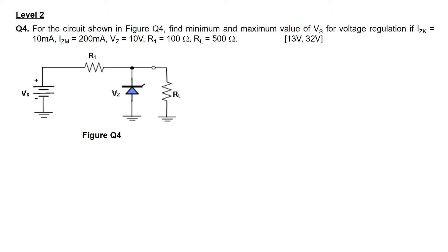To start with this question, we need to find the KVL equation in this loop. In this KVL loop equation, Vs is the voltage provider for the resistor R1 as well as the Zener diode Vz. Hence by KVL, Vs equals Vr1 plus Vz.